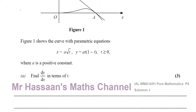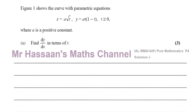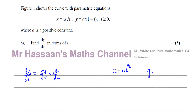To find dy/dx with parametric equations, we use the chain rule: dy/dx equals dy/dt times dt/dx. We get the x term ready to differentiate: x equals a times t to the power of a half. For y equals a t times 1 minus t, we expand the bracket to get a t minus a t squared.